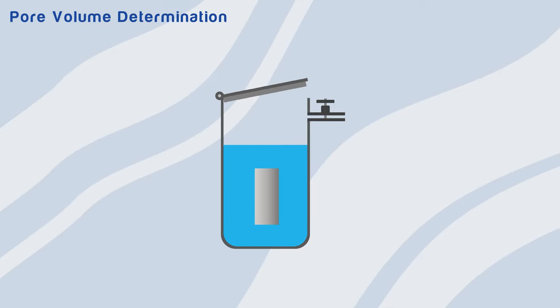Then we vacuum saturate the core with water or brine to make sure that water has filled all the pore spaces and no air is trapped in the core.